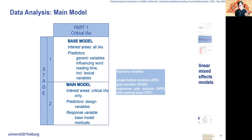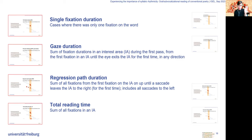Let's quickly look at eye tracking measures for those who don't work with eye tracking. Single fixation duration are the cases when there's only one fixation on the word. Gaze duration is the sum of fixation durations in an interest area during the first pass, from the first fixation in an interest area until the eye exits for the first time in any direction.